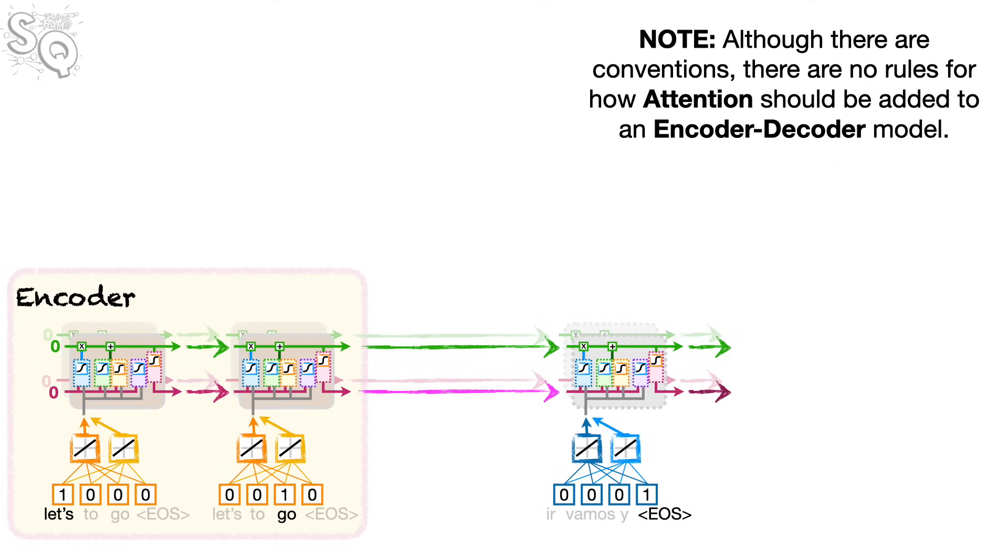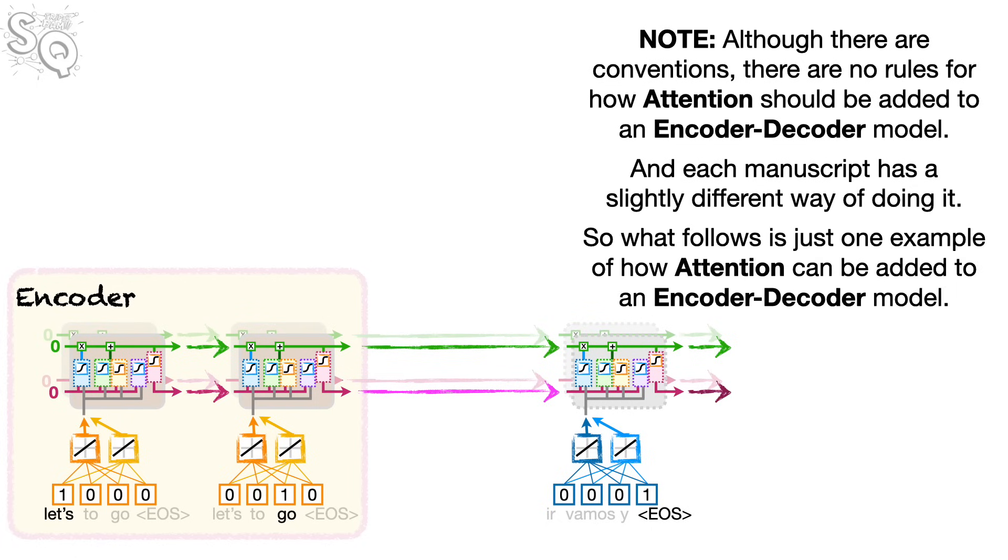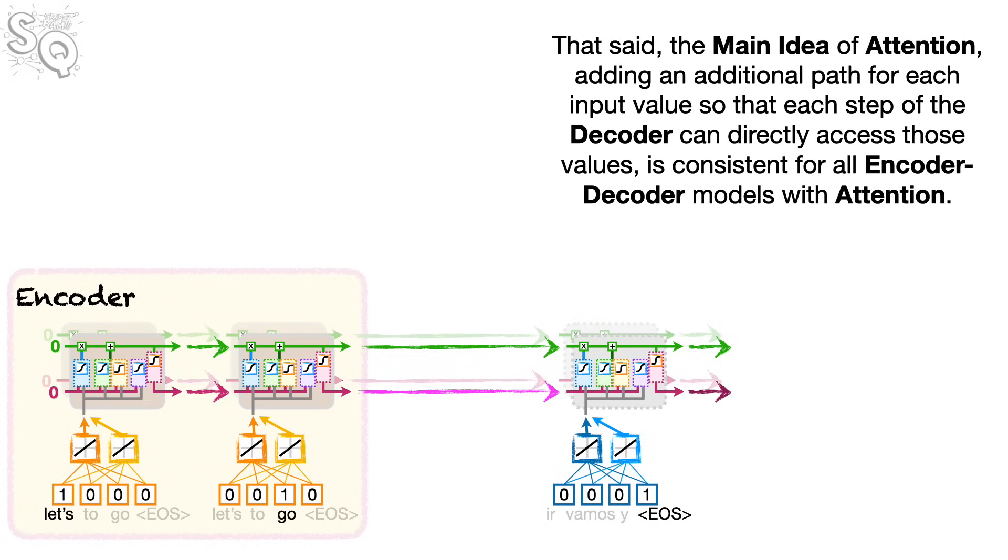Note, although there are conventions, there are no rules for how attention should be added to an encoder-decoder model, and each manuscript has a slightly different way of doing it. So, what follows is just one example of how attention can be added to an encoder-decoder model. That said, the main idea of attention, adding an additional path for each input value so that each step of the decoder can directly access those values, is consistent for all encoder-decoder models with attention. Bam!